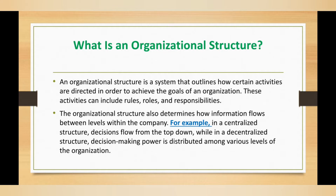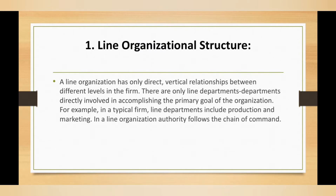So organizational structure is really important in order to achieve the company's goals and to run functioning in a smooth way. For example, in a centralized structure, decisions flow from top to down directly. While in a decentralized structure, decision-making power is distributed among various levels — power is not restricted to a few hands but distributed across many levels. Let's now discuss the different types one by one.